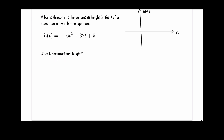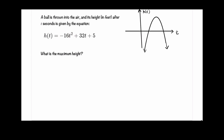I'm going to draw a graph of a quadratic equation in this form, where you have a negative coefficient next to the t squared. It will look like this — an upside-down parabola. The highest point is the vertex, and here is where we have t, and h of t is going to be our maximum height.